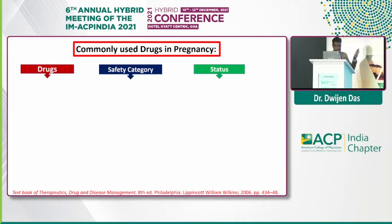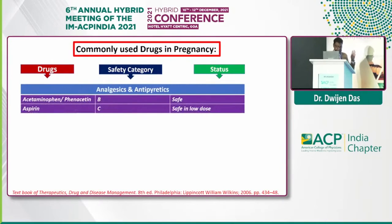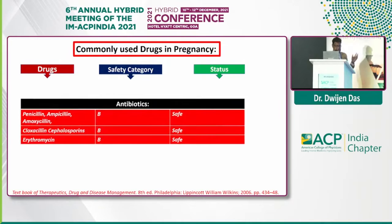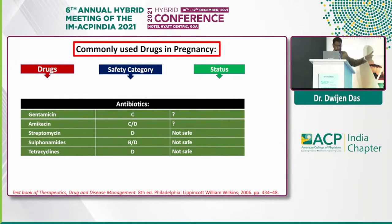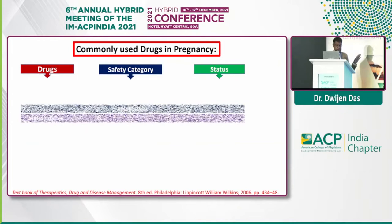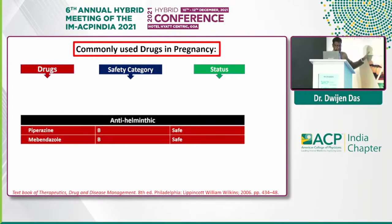There are lots of drugs that we need to use in day-to-day practice. For analgesics, the important safe option is acetaminophen or paracetamol, which is said to be a safer drug. Aspirin can be used in lower doses but should be used with caution in high doses. As antiemetics, a group of four drugs are said to be safer for use during pregnancy. For antibiotics, penicillin, cephalosporins, and macrolides are said to be safe in pregnancy. Other drugs like amikacin will have to consider the risk-benefit ratio. As antiamoebic, metronidazole is said to be safer. For anthelmintics, there are safer drugs that can be used in pregnancy.